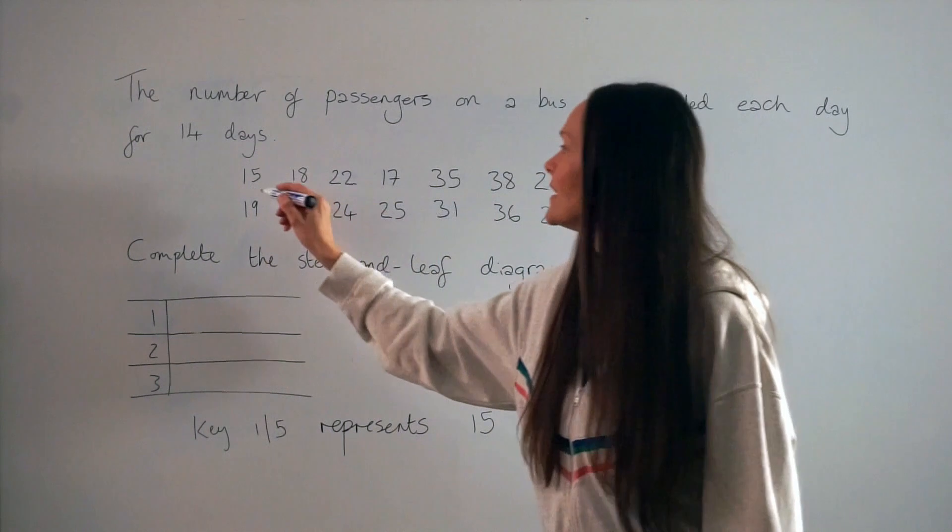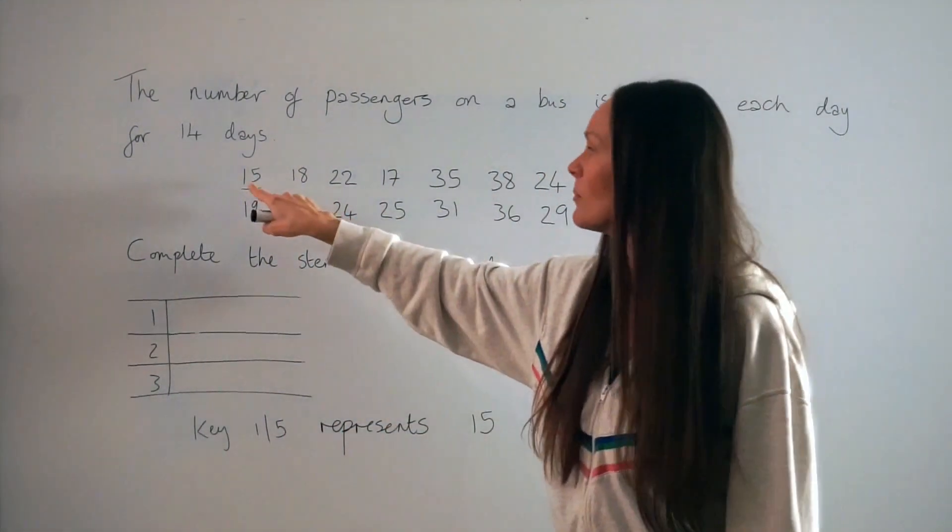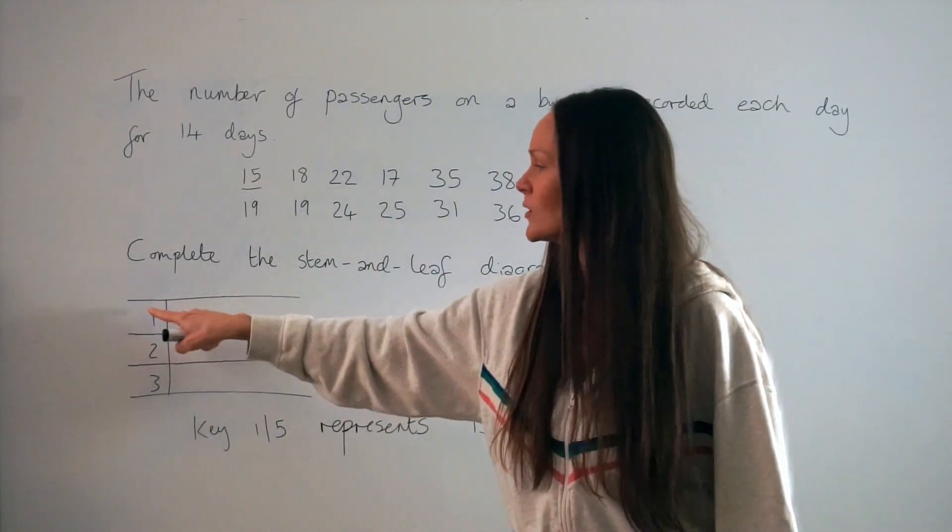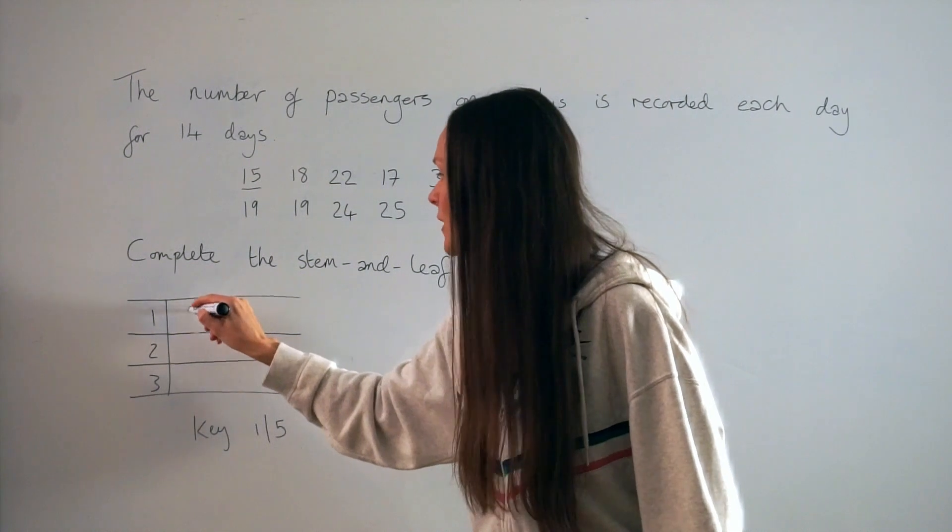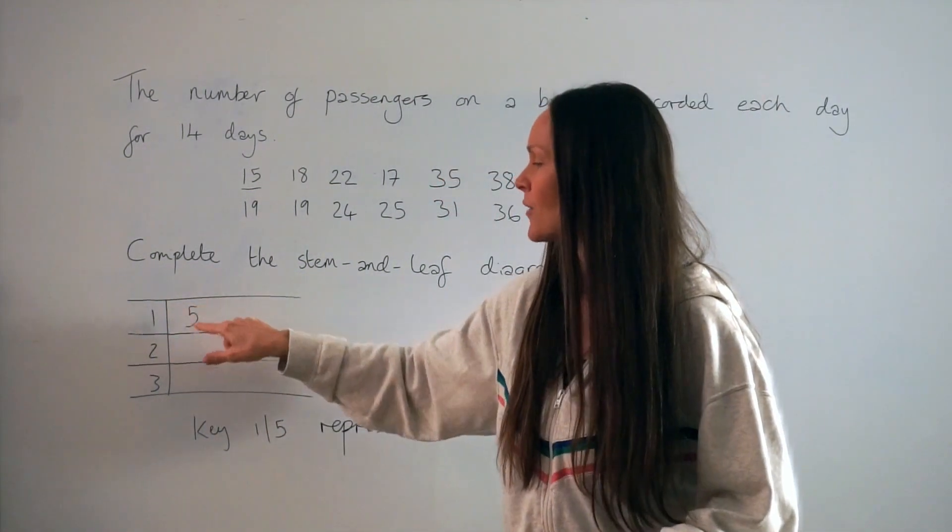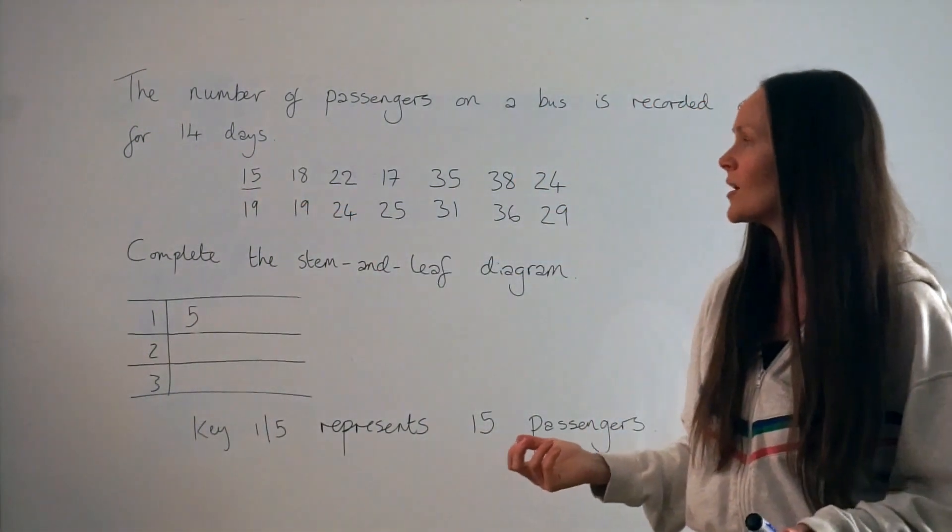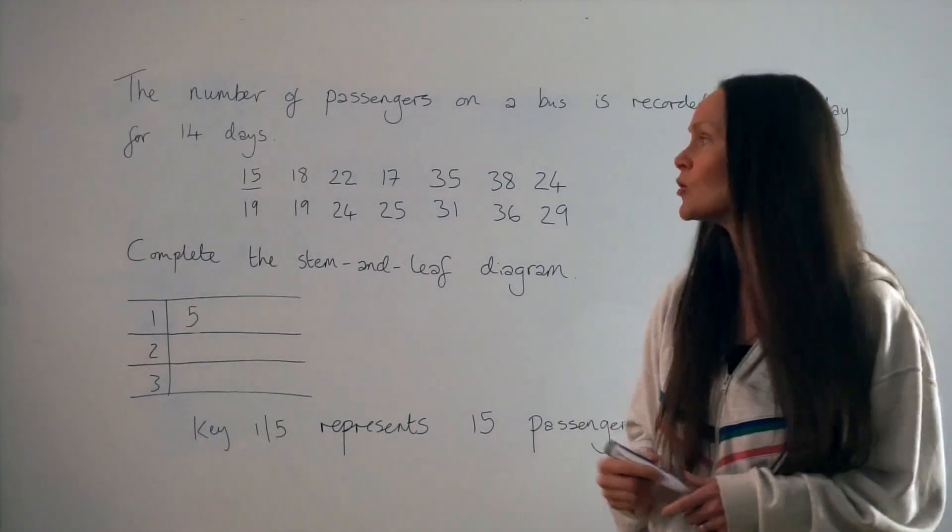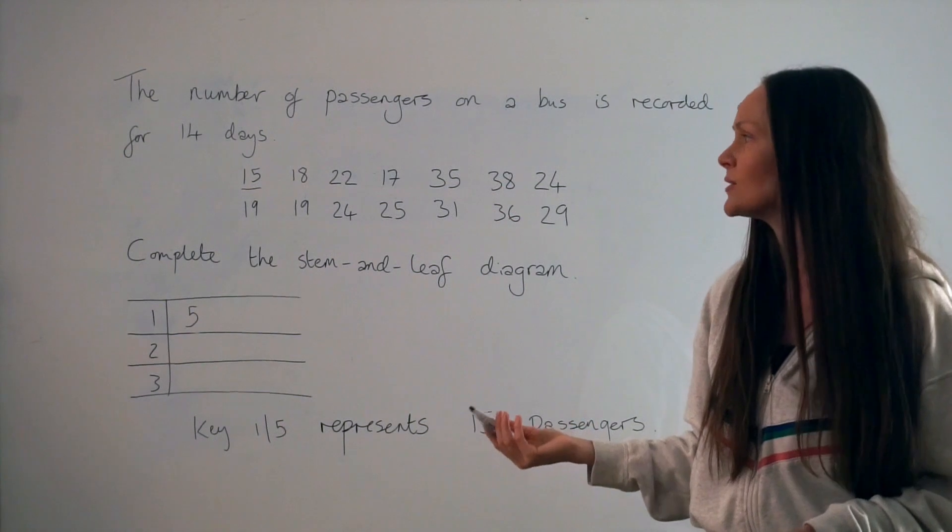The smallest number in the list is the number 15. So it starts with the number 1, so it has to go in the top row because here is the number 1. So I need to write down the number 5 here because 1-5 means 15 passengers. It's a good idea to cross off the numbers or underline them as you go through the list so you don't miss any out.